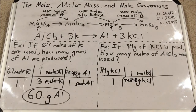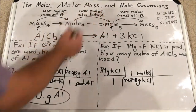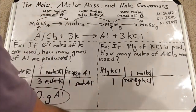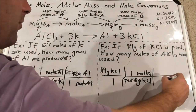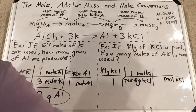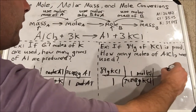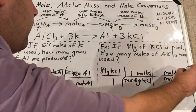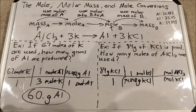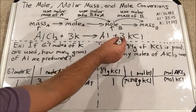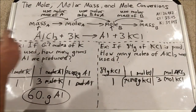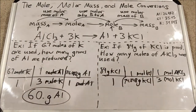Now I'm in moles of KCl, and I need to convert using the molar ratio to moles of aluminum chloride. I put moles AlCl3 on top and moles KCl on bottom. Looking at the reaction: there's a three next to KCl, so three moles KCl; there's no number in front of aluminum chloride, so just one mole AlCl3.